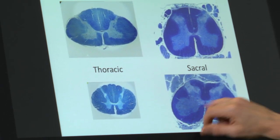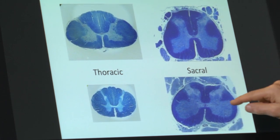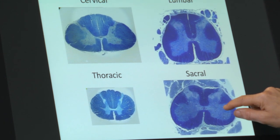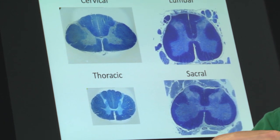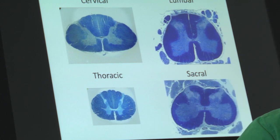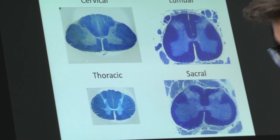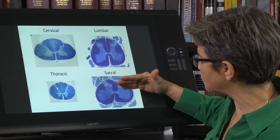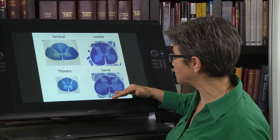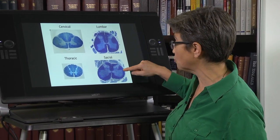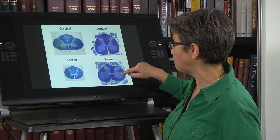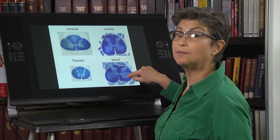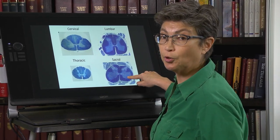In the sacral cord, this collection up here are preganglionics, preganglionic autonomic neurons. They're going to go to the ganglia that are going to then, in turn, innervate the bladder, colon, and genitalia. So remember that there's a basal plate. The ventral half of the spinal cord derives from the basal plate and is motor, with the dorsal pie slice of that ventral half being autonomic and the ventral pie slice being skeletal motor.